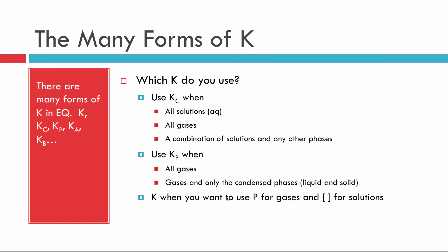So which K do we use? When do we use them? Well, we use K sub C when everything's a solution. That's easy. When they're all gases, we can also use K sub C. And a combination of any situation, of any particular set of phases, you can always use K sub C. We also might come across K sub P, but that one's only useful when we have all gases or gases and condensed phases.